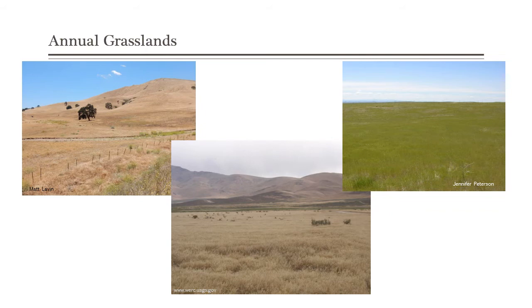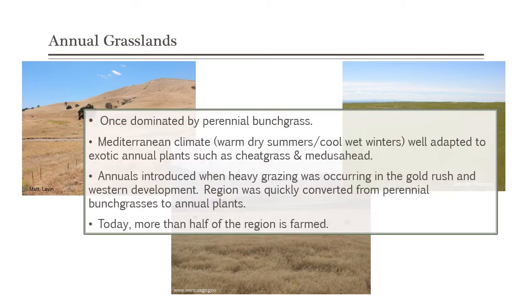Those annual introduced grasses were promoted because there was really heavy grazing early on — because of the gold rush and Western development via the Oregon Trail and California Trail. People moving west put a lot of pressure on those ecosystems. Heavy grazing probably helped the quick conversion from perennial to annual grasslands. The warm, dry summers and wet winters were well adapted to these grasses that came from Mediterranean regions — cheatgrass and medusahead are two we'll learn in class.